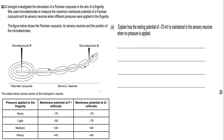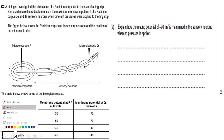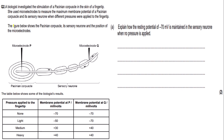Now I'm going to get on to a couple of exam style questions. There aren't a lot of exam style questions for the receptor section, as the exam questions for this topic cross over a lot with the nervous impulse section. A biologist investigated the stimulation of a Pacinian corpuscle in the skin of a fingertip. She used microelectrodes to measure the maximum membrane potential — the electrical difference between the different sides of the membrane — of a Pacinian corpuscle and its sensory neuron when different pressures were applied to the fingertip. The different pressures here are the independent variable.